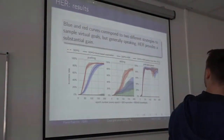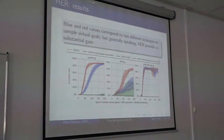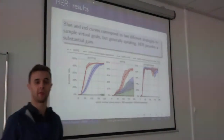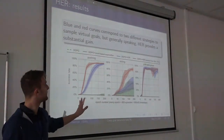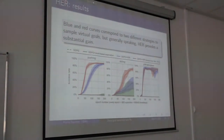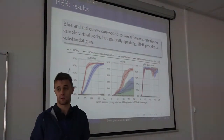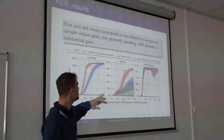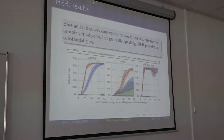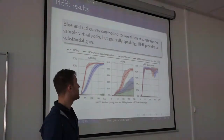These are results from the hindsight experience replay paper, not my own results. A question arose about what the DDPG baseline means, since standard DDPG doesn't use goals. My guess is they use a version of DDPG with UVFA — augmenting the state with the goal — but without retraining with additional goals at the end of the episode. They don't state this clearly in the paper.